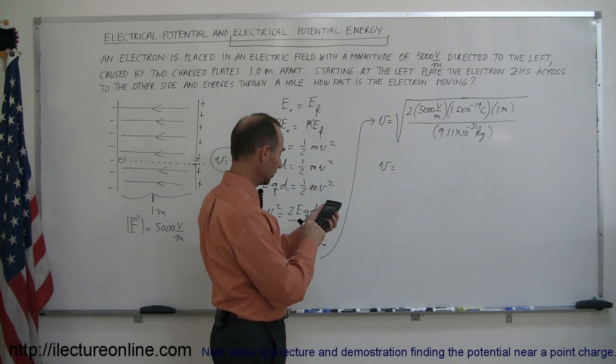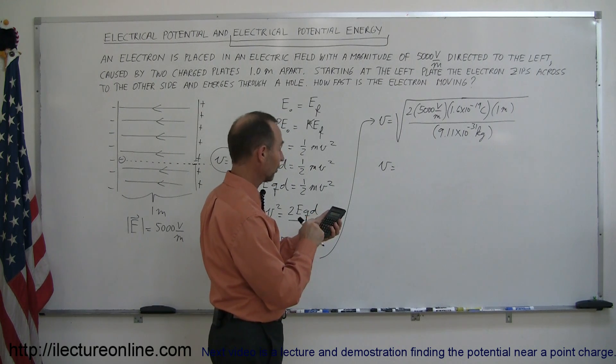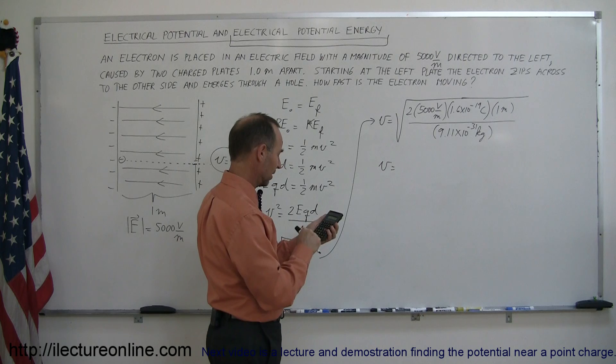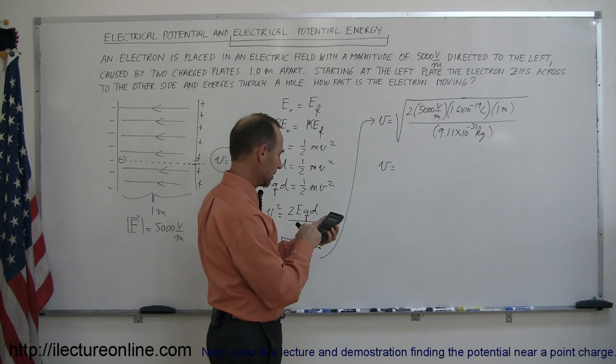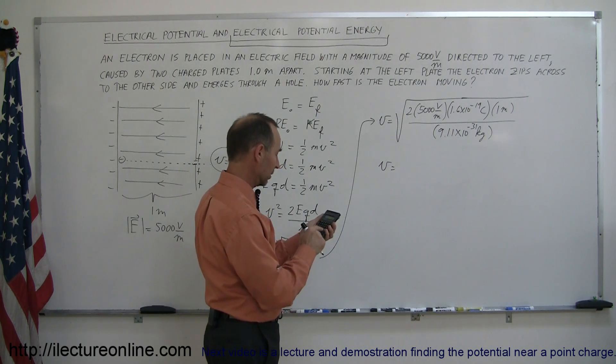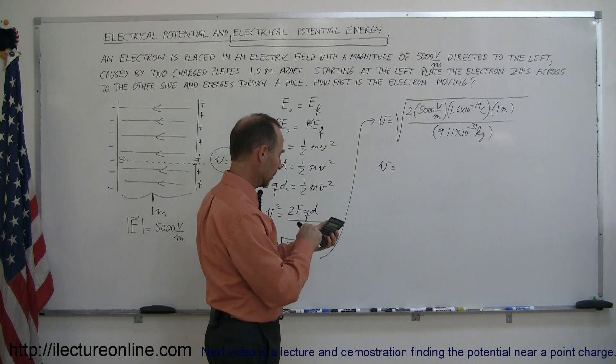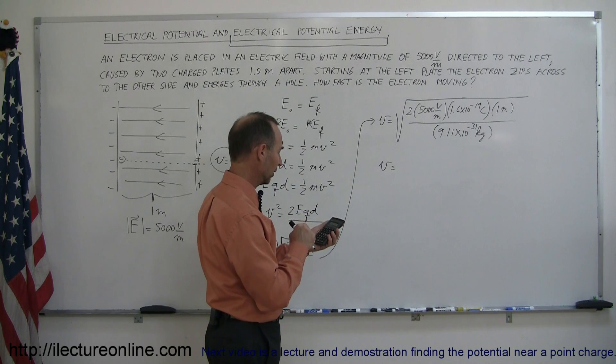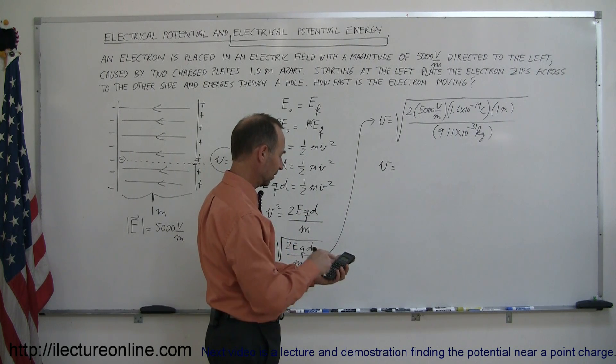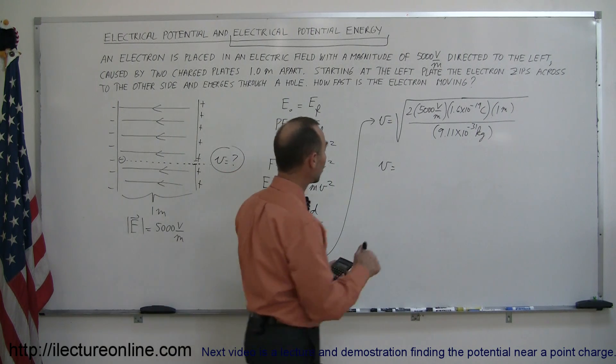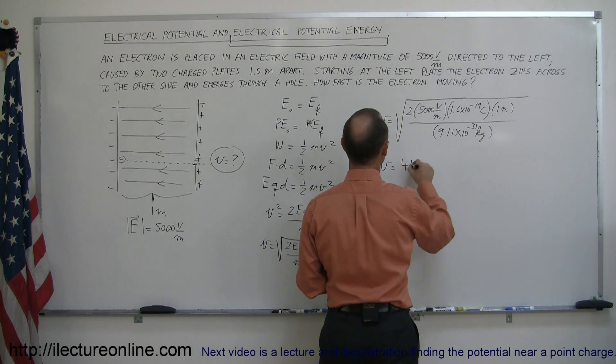So 2 times 5,000 is 10,000 times 1.6 E minus 19 times 1 divided by 9.11 E minus 31 equals and now we take the square root of that. Wow that's quite fast. This is 41.9 million meters per second.